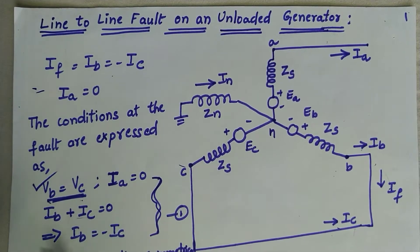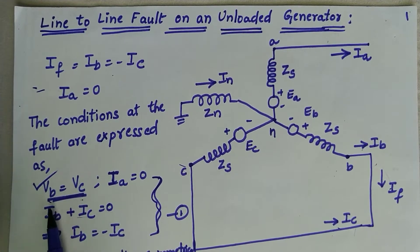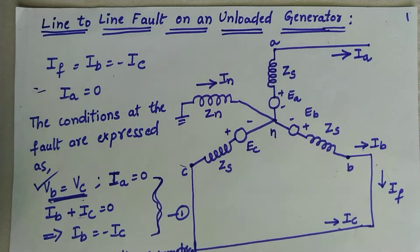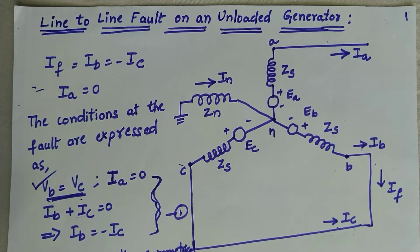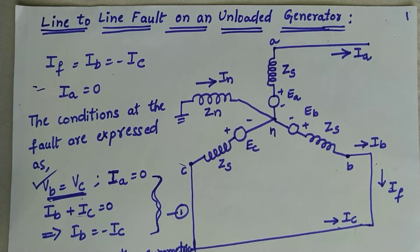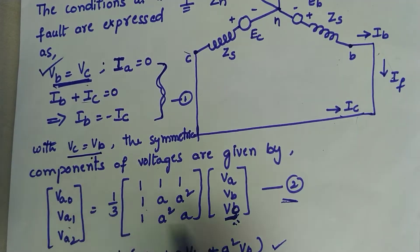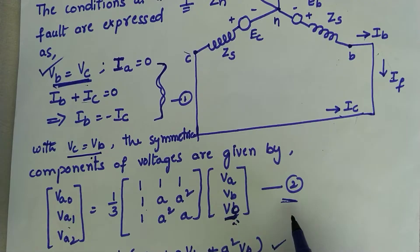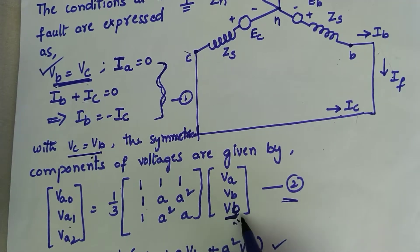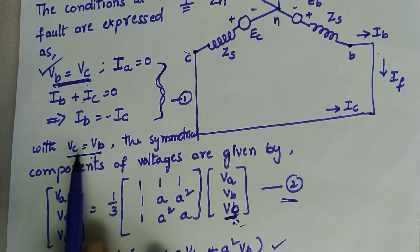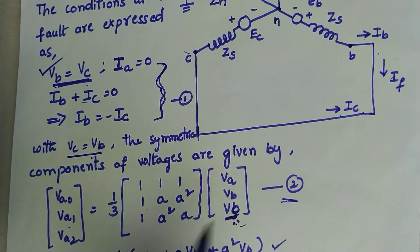From these observations, we first consider the condition that Vb equals Vc. We now substitute this observation into the symmetrical components equations. In this equation, usually we have Vc, but substituting the condition Vc equals Vb, we can write Vb here instead of Vc.